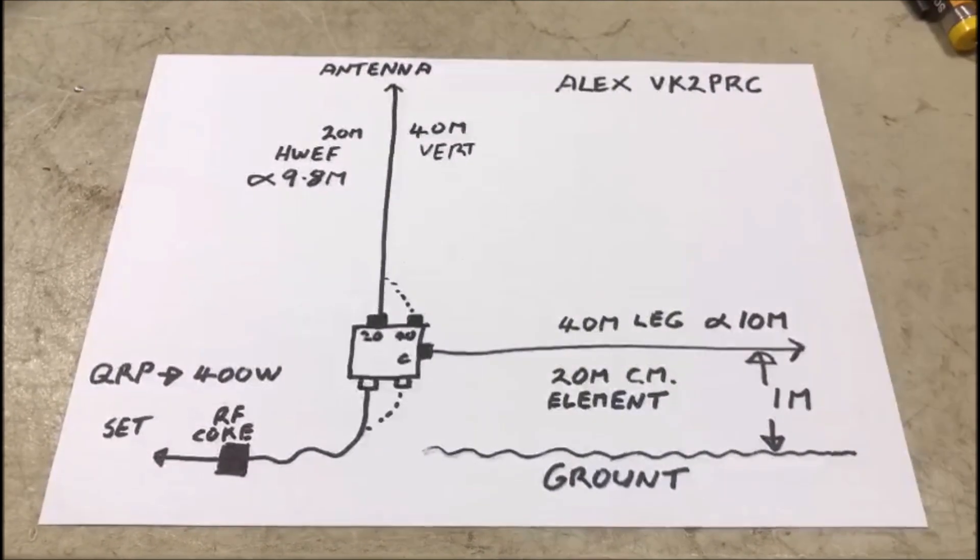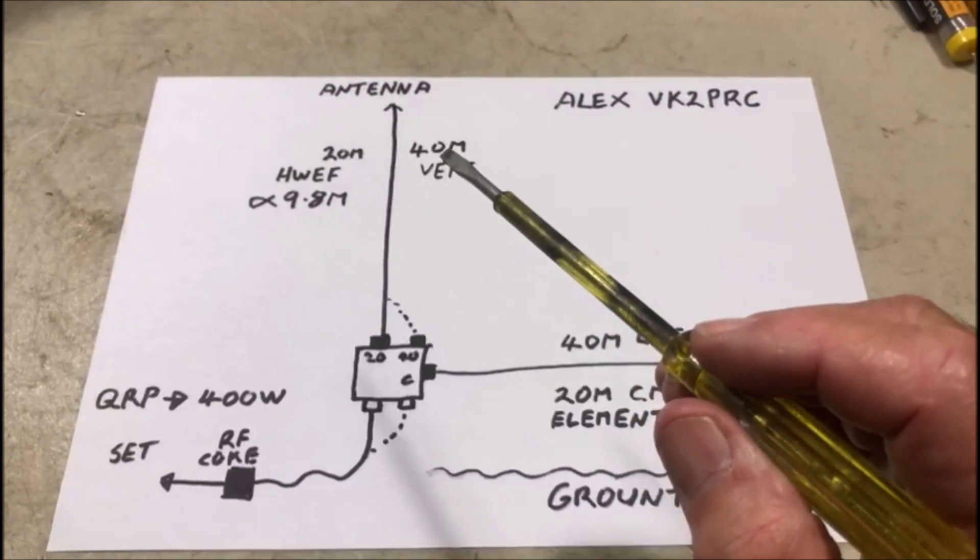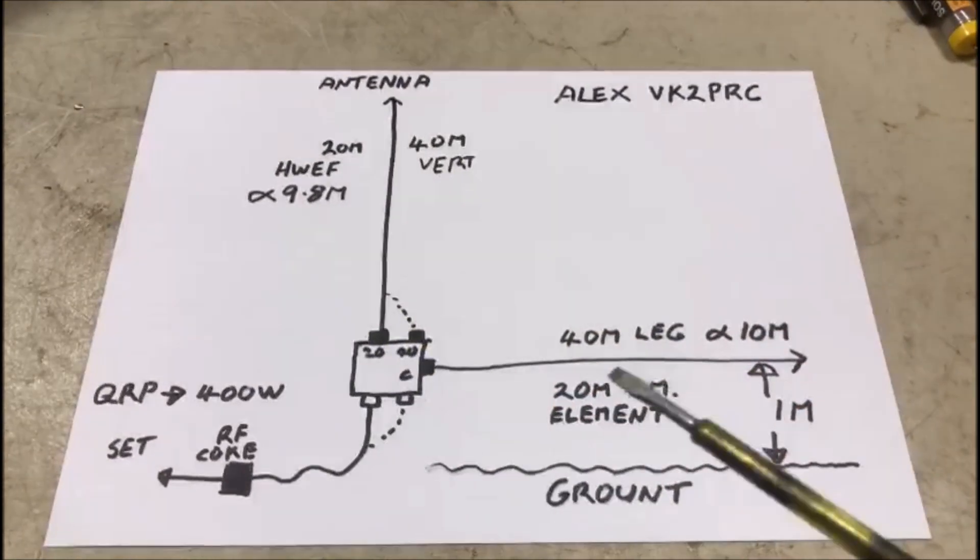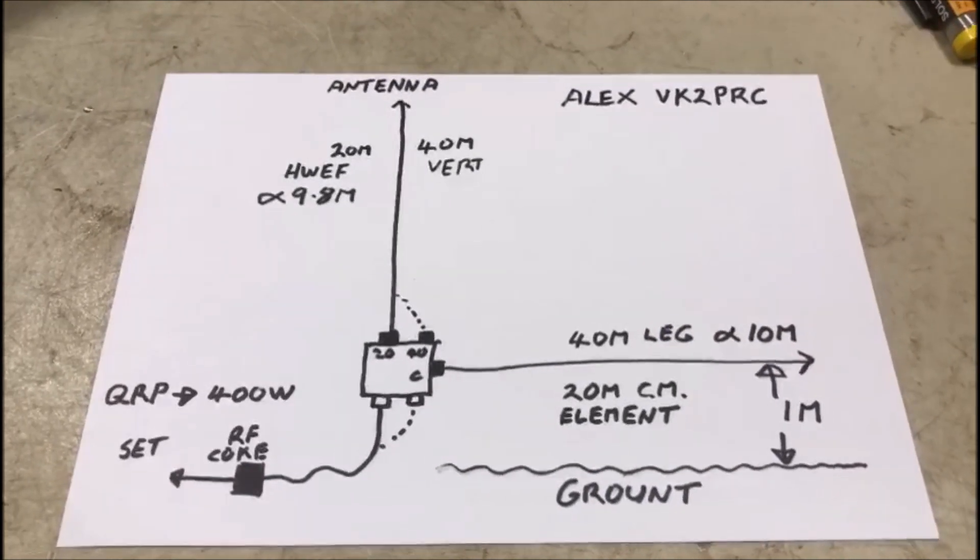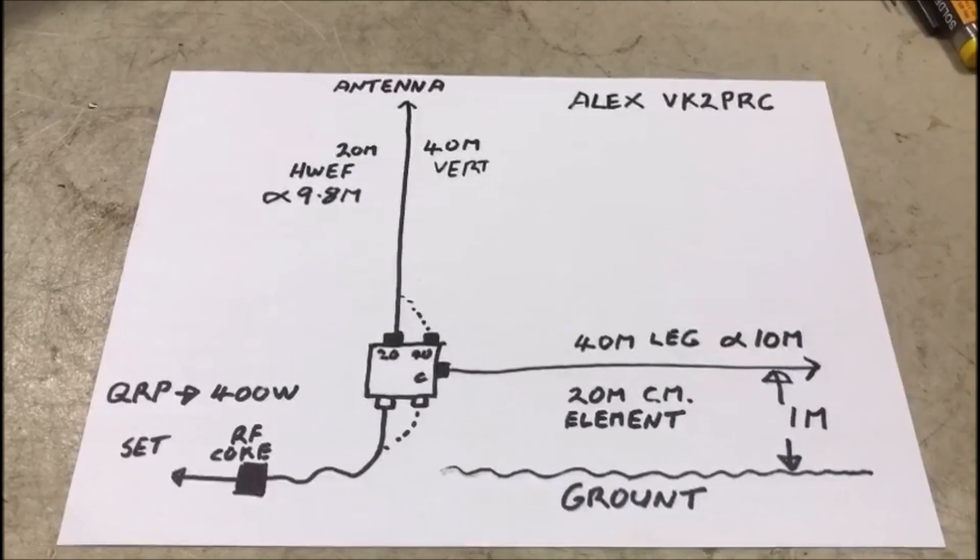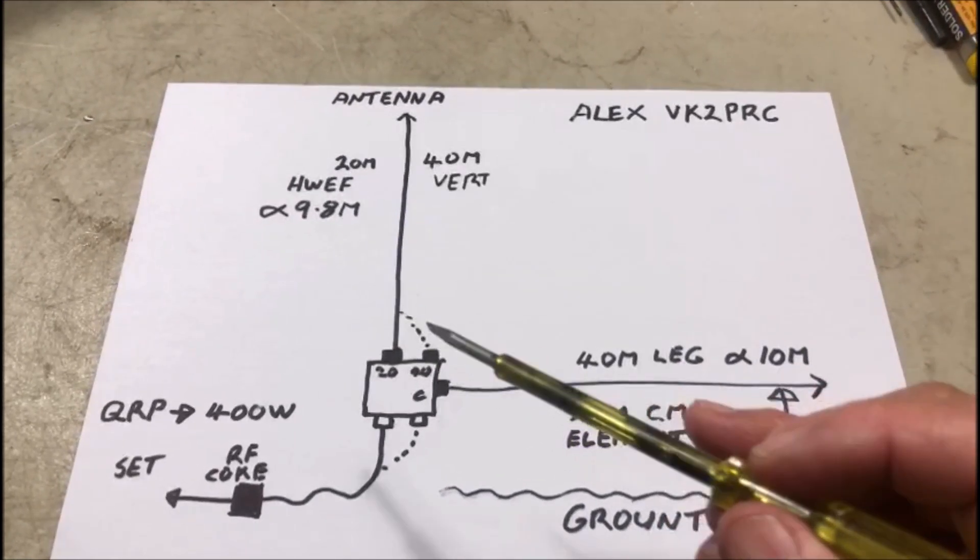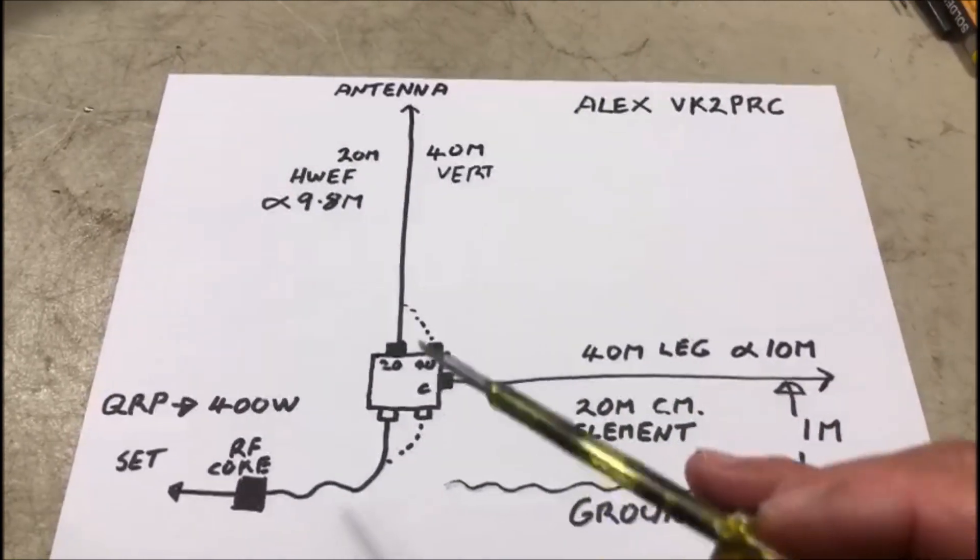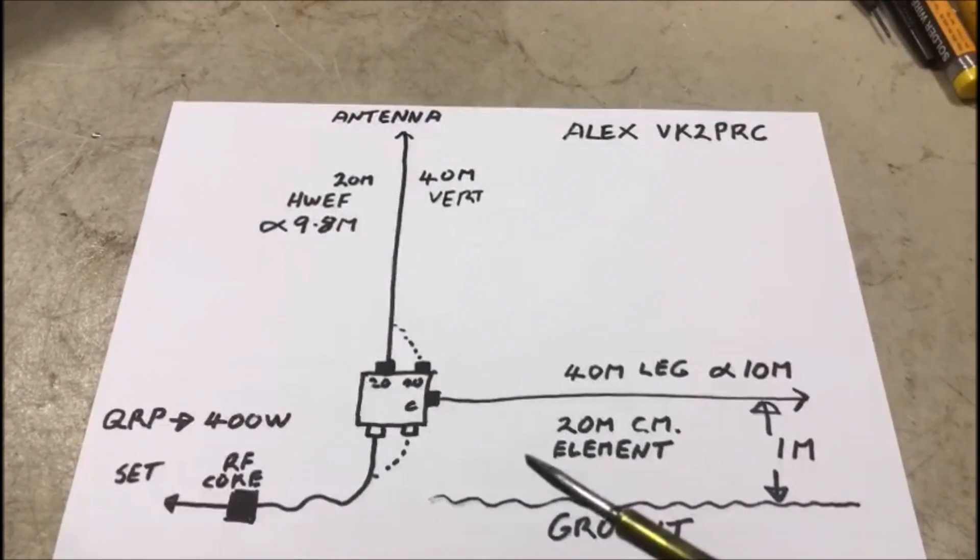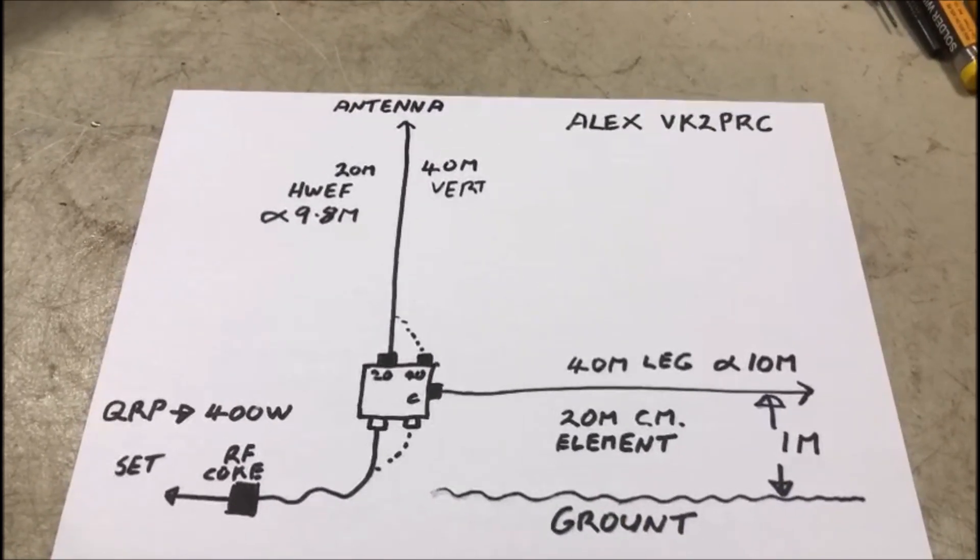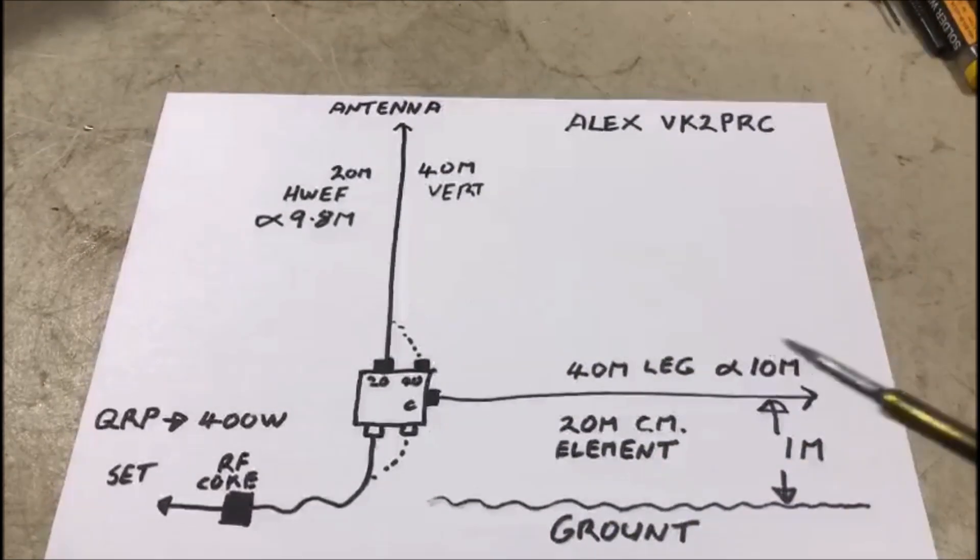But just taking it one step further, what we can do is incorporate the same installation as a 40 meter vertical as well. So let's have a look at how we do that. We simply switch from the 20 meter terminals to a 40 meter terminal at the antenna and the transmission line, and we turn this into a dipole really with a vertical and a horizontal component.